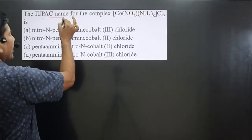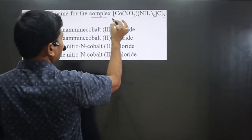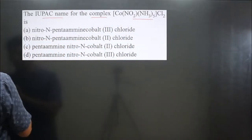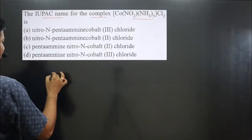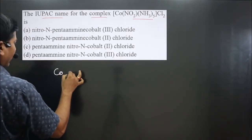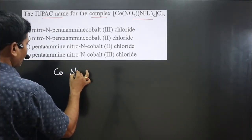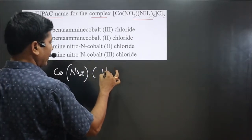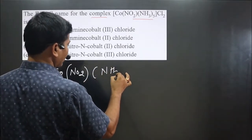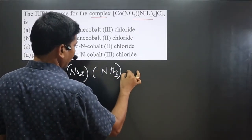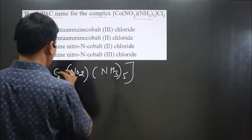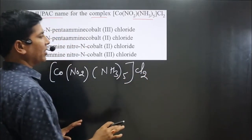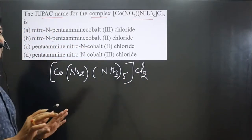The question asks for the IUPAC name of the complex given here. Let me write the complex. We have cobalt, then NO2 is a bidentate ligand, then a neutral ligand is there, and NH3 is there. The counter ion is Cl2.